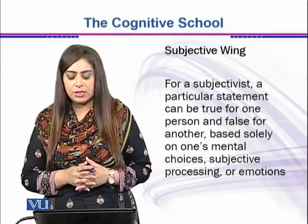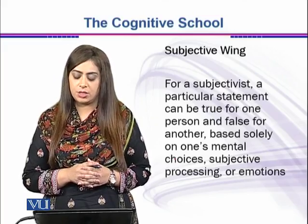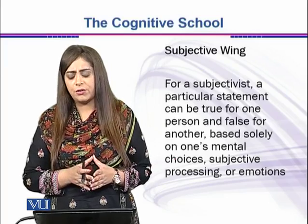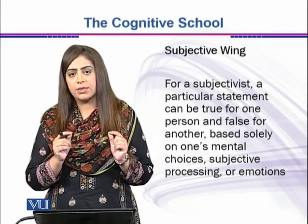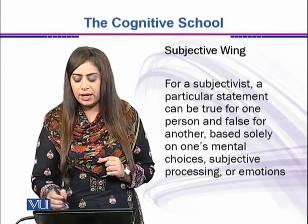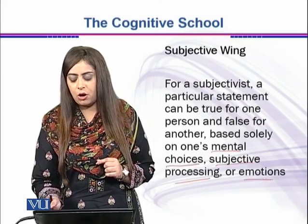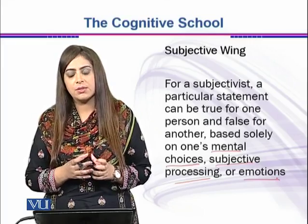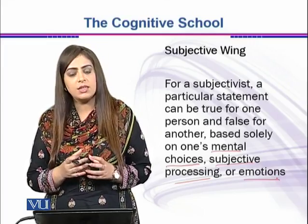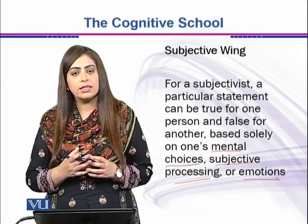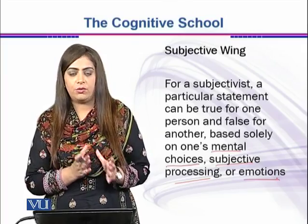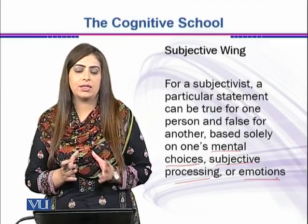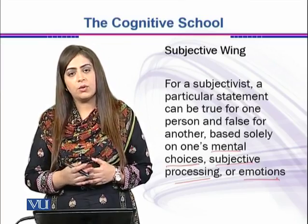The subjective wing says that for a subjectivist, a particular statement can be true for one person and false for another based solely on one's mental choices, subjective processing, or emotions. Unlike objectivity, which requires evidence, here we are talking about mental choices and subjective processing. As we have seen in previous videos, mental choices, perceptions, mental maps, and mental schemas are different in every person. So every person has a different mental choice, different mental map, and different mental schema — this is about the subjectivity of things, which is different for everyone.